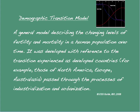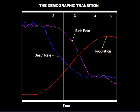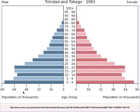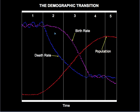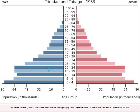Another way of studying the demographic transition is to use the age-sex pyramid. Many LEDCs have been undergoing transformation and moving through the various stages of the demographic transition. One such country is the tiny Caribbean nation of Trinidad and Tobago. Here we see its age-sex pyramid for the year 1983, which is typical of a country in stage 2 of the demographic transition, with high birth rates, falling death rates, and an increasing population.